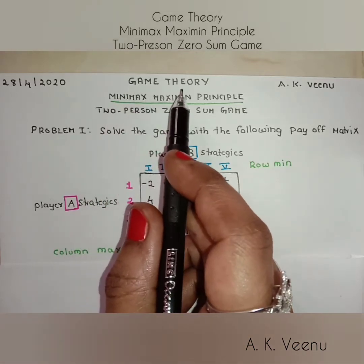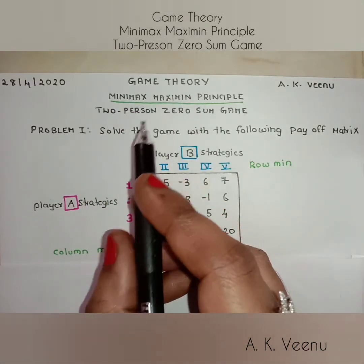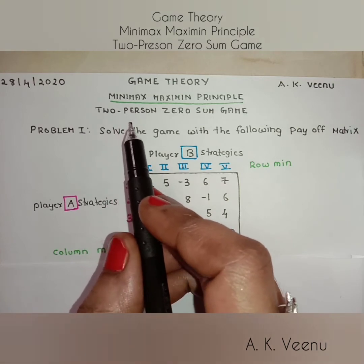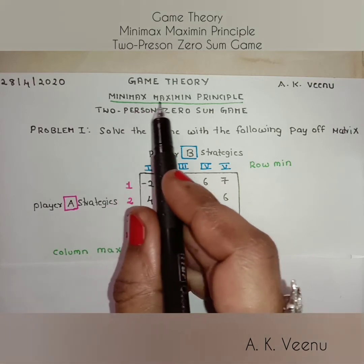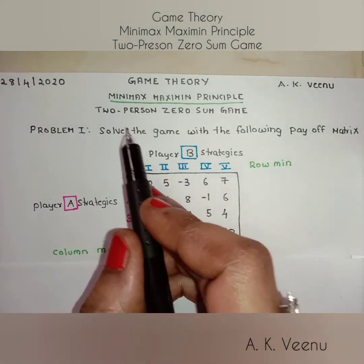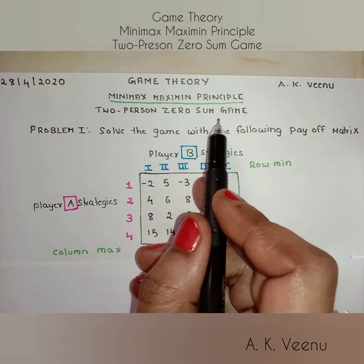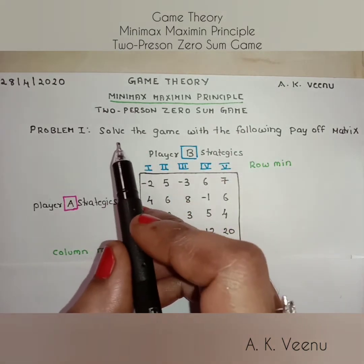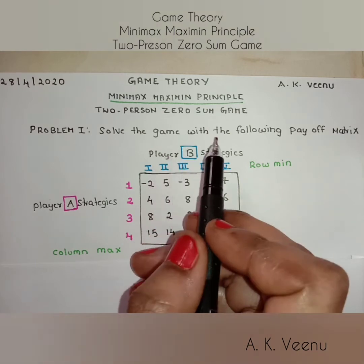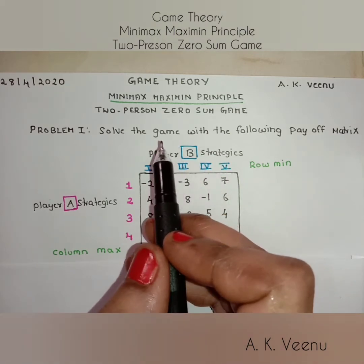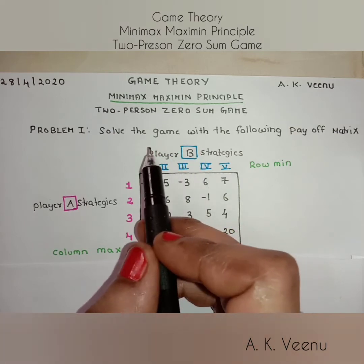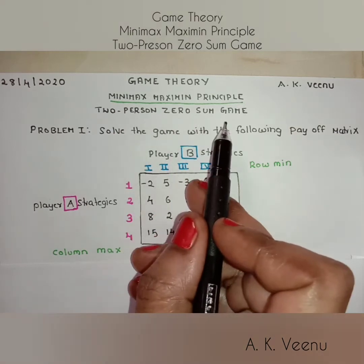Welcome to game theory. Today we are going to solve an interesting game theory problem using the minimax-maximin principle. We are going to look at a two-person zero-sum game. When a game has only two players and the gain of one player is equal to the loss of another, it is called a two-person zero-sum game.